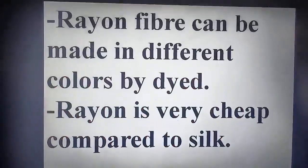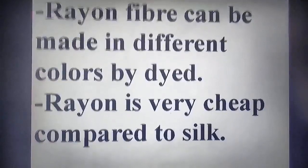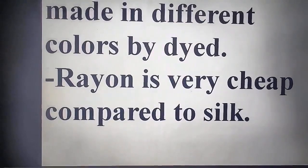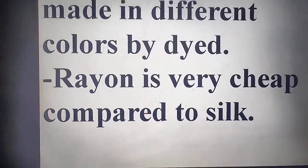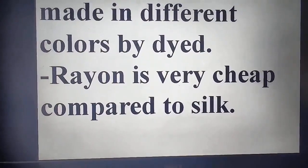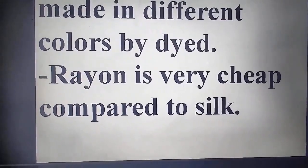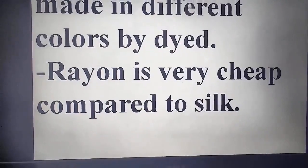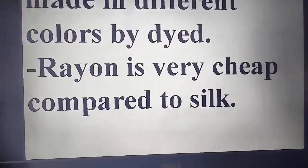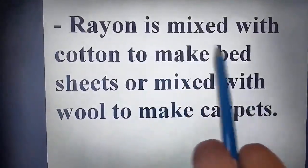Rayon fiber can be made in different colors by dyeing. Rayon is very cheap compared to silk. For example, a pure silk sari bought at an emporium can cost more than ₹30,000 for good quality, whereas rayon is very cheap comparatively. So rayon is an artificial silk — not natural silk — and much cheaper than pure silk.